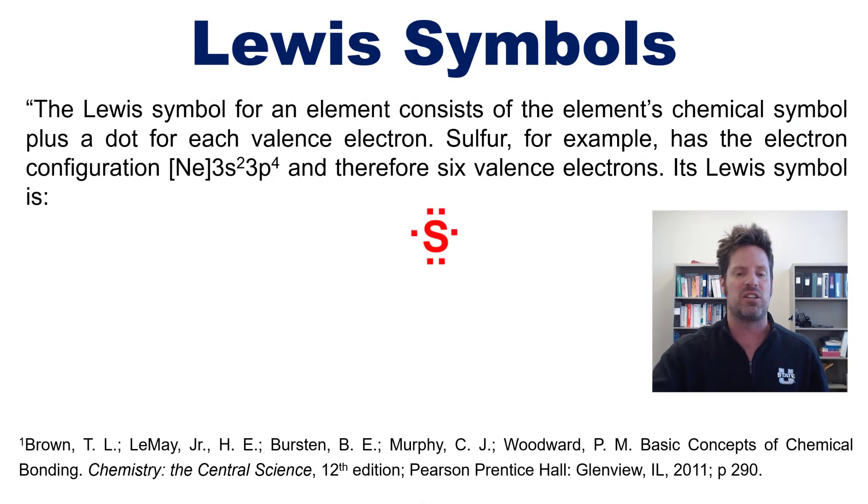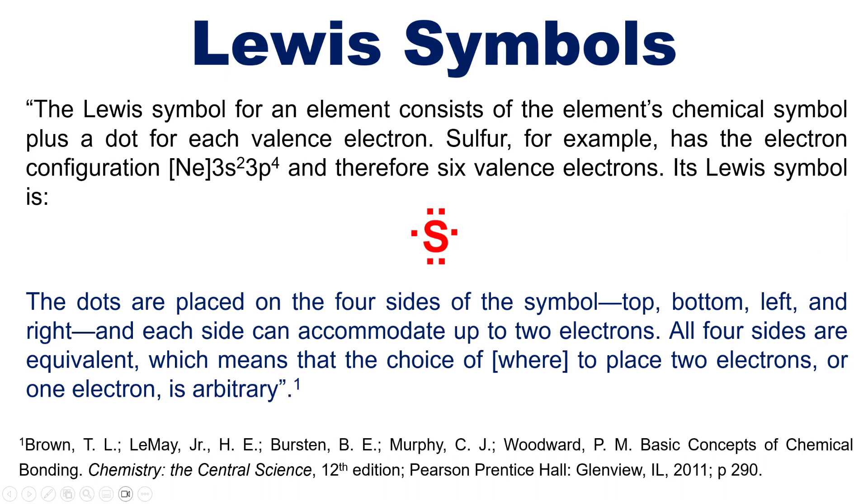Its Lewis symbol then is drawn like this. You just write down the elemental symbol for sulfur, which is an s, and then surround it with dots. The dots are placed, of course, on the four sides of the symbol. Top, bottom, left, and right, and each side can accommodate up to two electrons. All four sides are equivalent, which means that the choice of where to place two electrons or one electron is completely arbitrary. So this way of drawing elements all by themselves is called Lewis symbols.